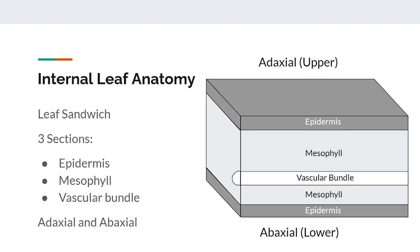Now we can begin talking about the internal anatomy of leaves. A leaf is typically divided into three main regions: the epidermis, mesophyll, and vascular bundle or veins. It's structured sort of like a sandwich, as you can see in this picture. The vascular bundle layer does not stretch across the entirety of the leaf like the epidermis and mesophyll layers do. In fact, the vascular bundle resembles more of a straw-like shape, which can be seen more clearly when the cross-section is rotated like it is in the image.